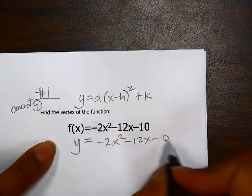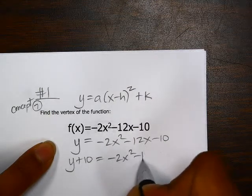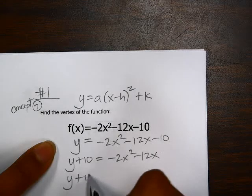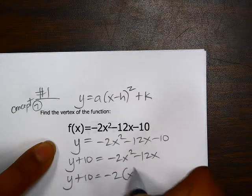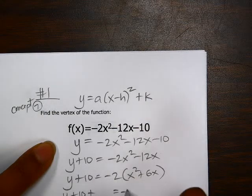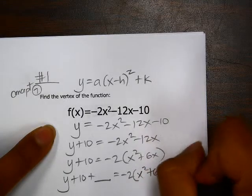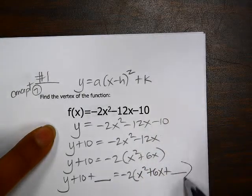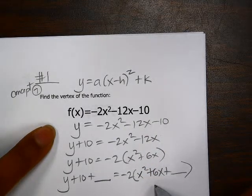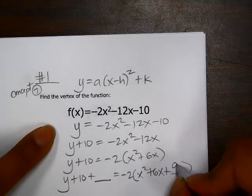To get it in graphing form, first we need to add the 10 over, and then factor out the negative 2. Then we're going to complete the square. To complete the square, we use the formula b divided by 2 squared. So that would be 6 divided by 2 is 3, 3 squared is 9.